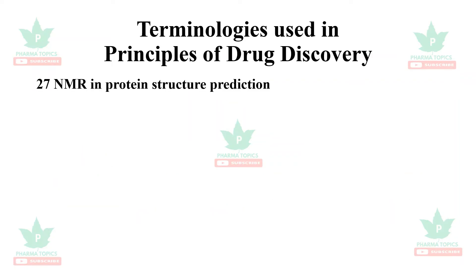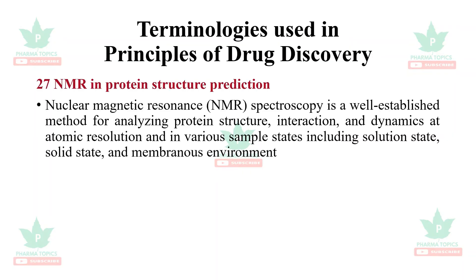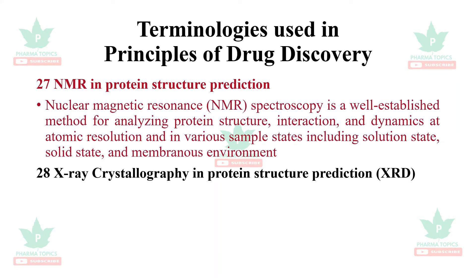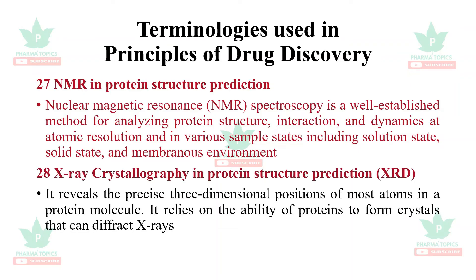NMR in protein structure prediction: nuclear magnetic resonance spectroscopy is a well-established method for analyzing protein structure, its interactions and dynamics at atomic resolution, in various sample states including solution state, solid state, and membranous environment. X-ray crystallography (XRD) in protein structure prediction reveals the precise three-dimensional positions of atoms in a protein molecule, relying on the ability of proteins to form crystals that diffract X-rays.